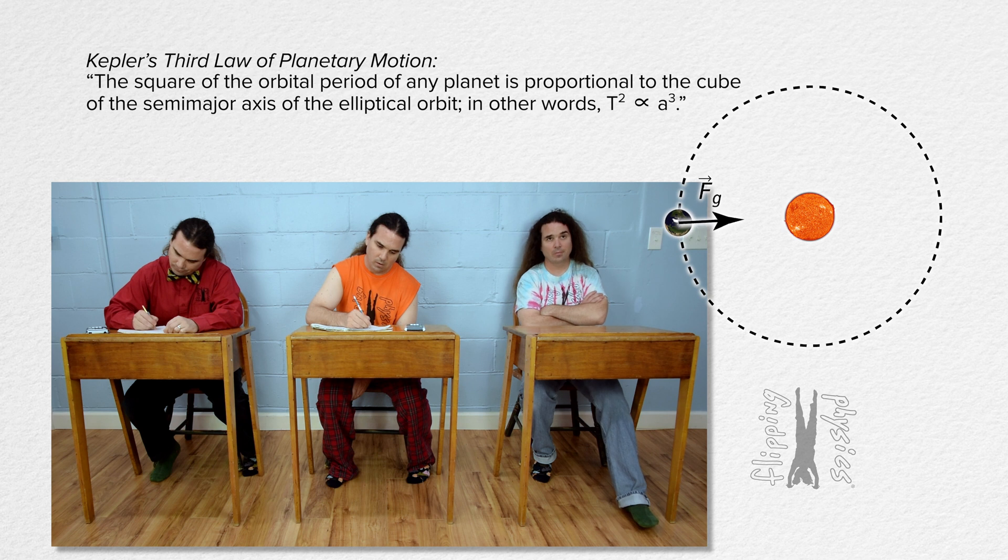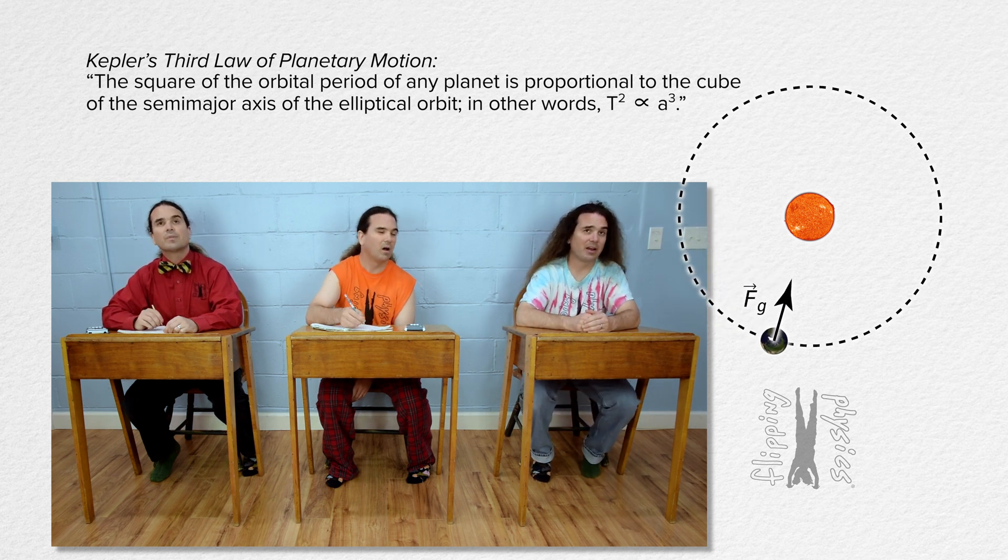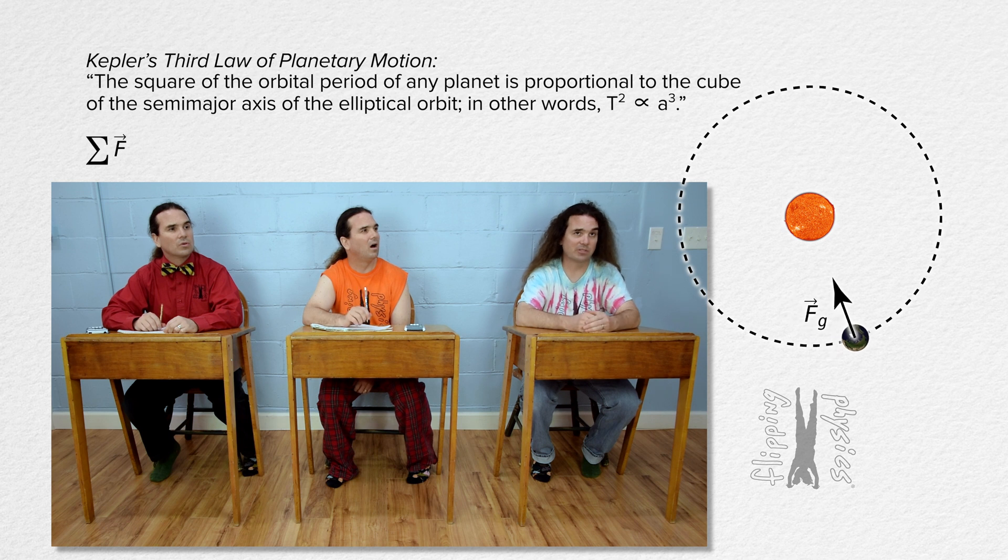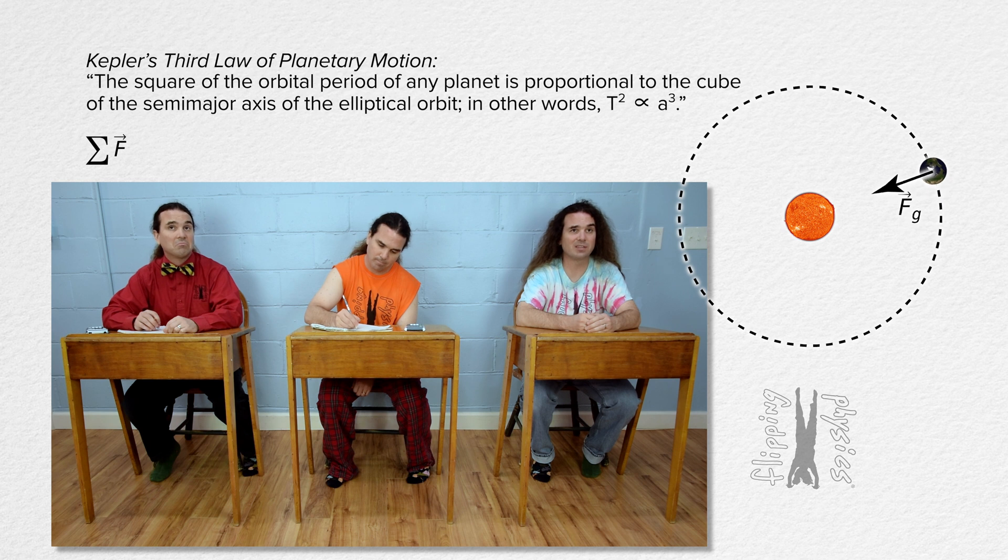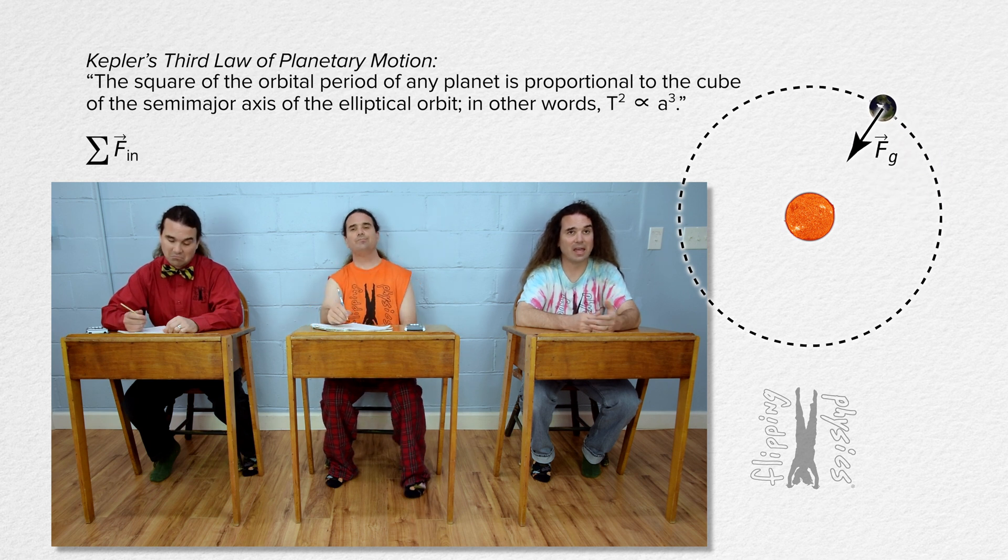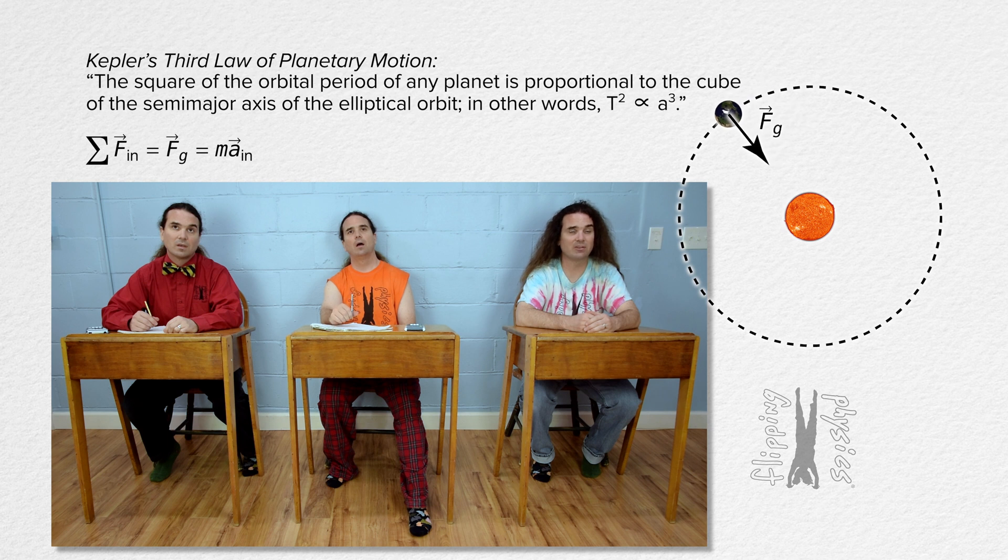And keep solving the problem. Well, we have a free body diagram, so the net force acting on the planet… the planet is moving in a circle, so let's sum the forces in the n direction. That equals force of gravity, and net force equals mass times acceleration in the n direction, which is the centripetal acceleration.